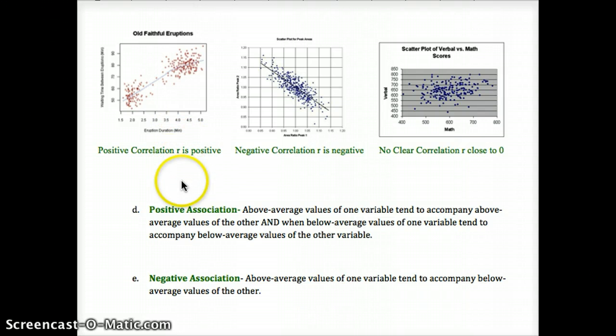We measure the correlation with a value of r. r is going to go from negative 1, where we have all of our points on a line going from upper left to lower right, to positive 1, where we have all of our points on a line going from lower left to upper right, or a positive slope. The value of r tells us whether it's positive or negative, so the direction, and it tells us the strength. This value of r is going to be really helpful for two of those aspects.